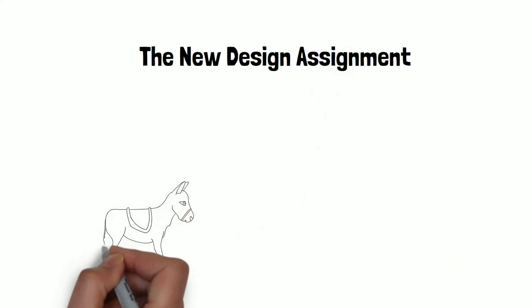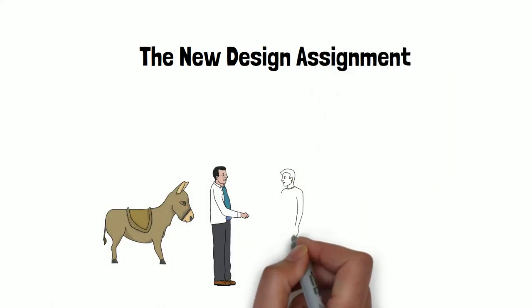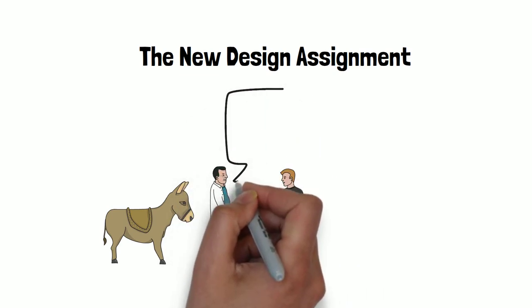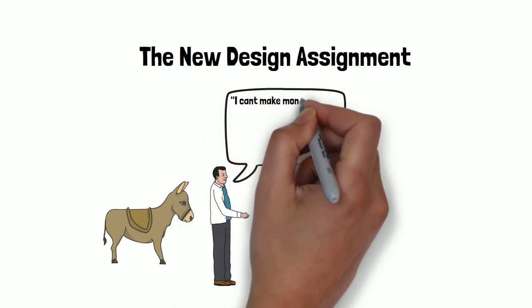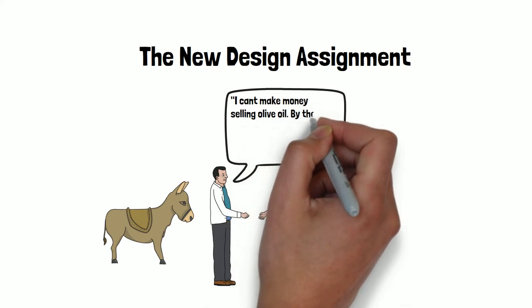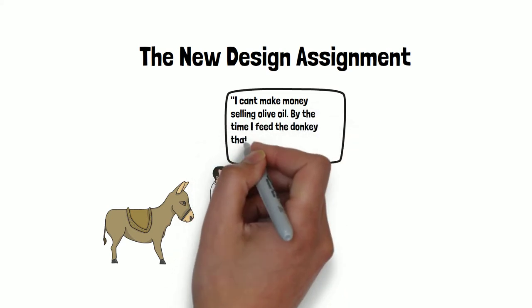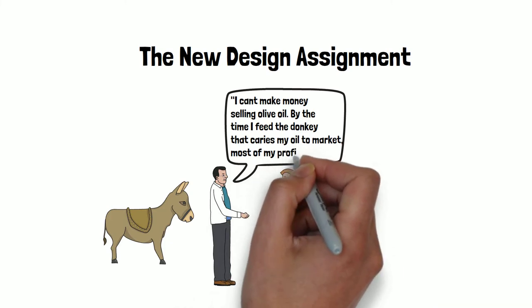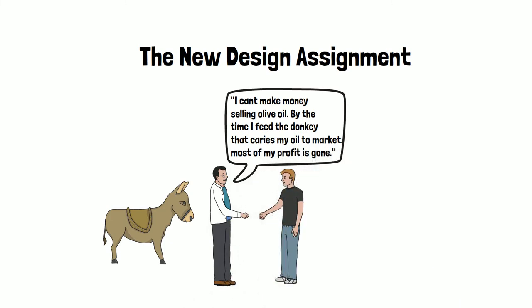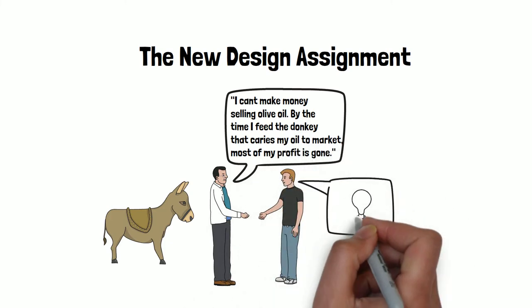The new design assignment. Here's an old joke about efficiency. An olive oil vendor returns from the marketplace and complains to his friend. I can't make money selling olive oil. By the time I feed the donkey that carries my oil to market, most of my profit is gone. His friend suggests he feed the donkey a little less.